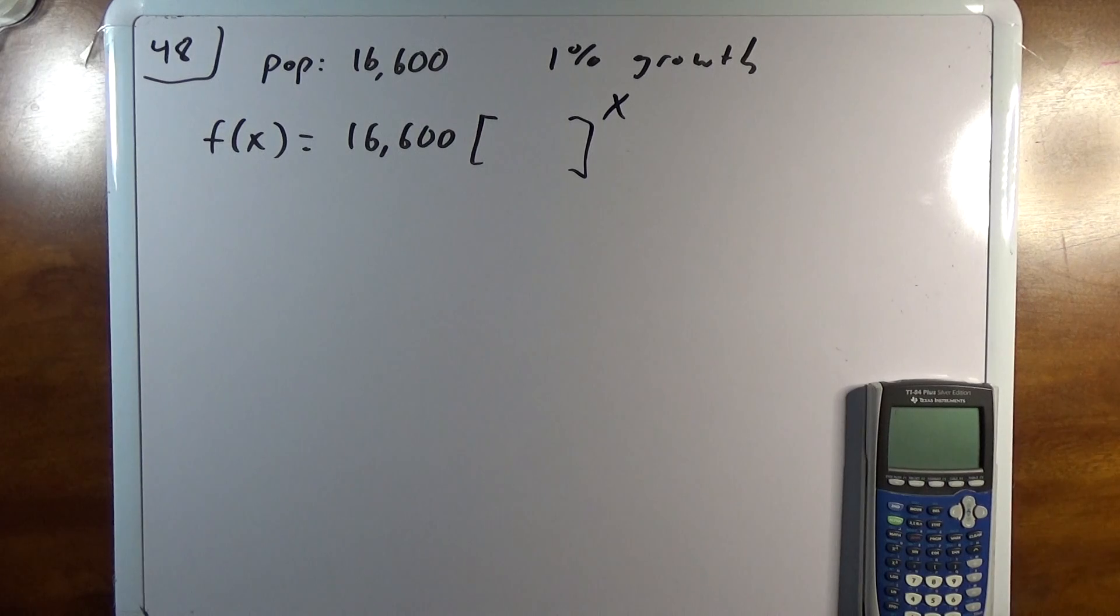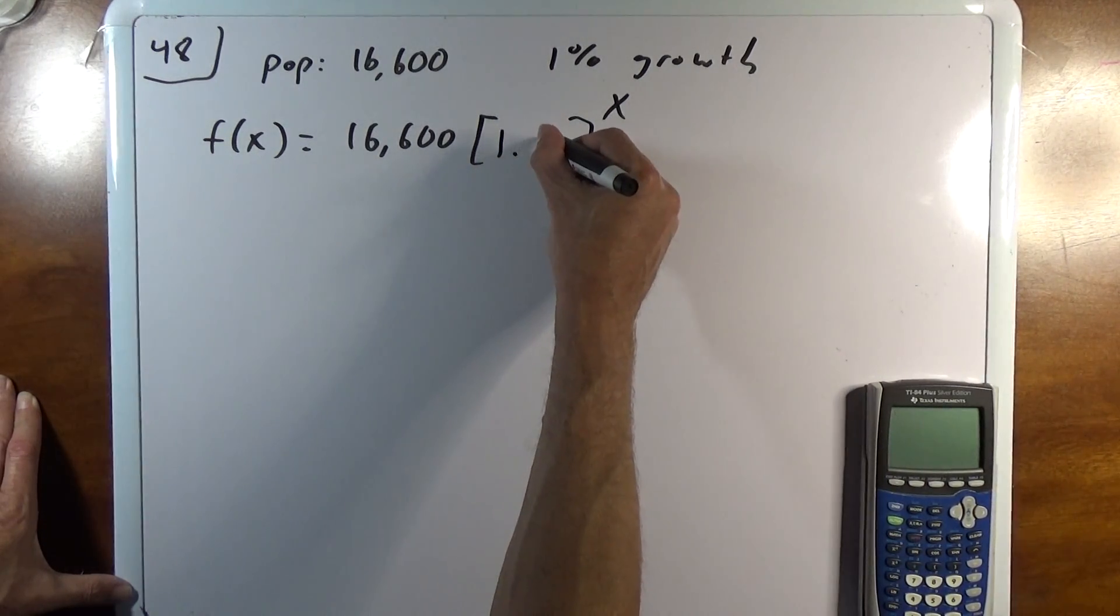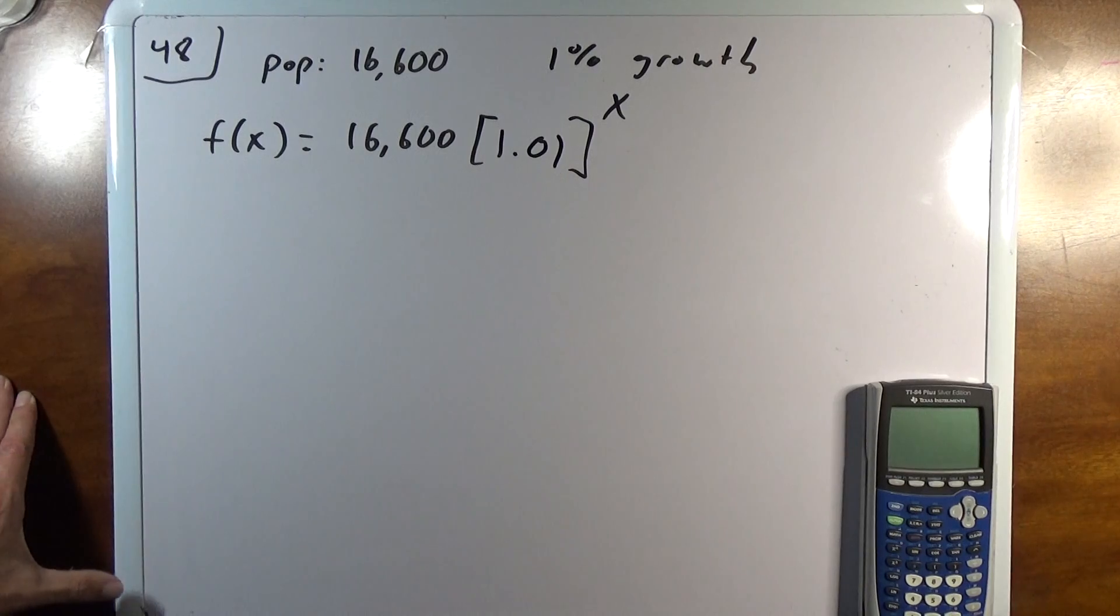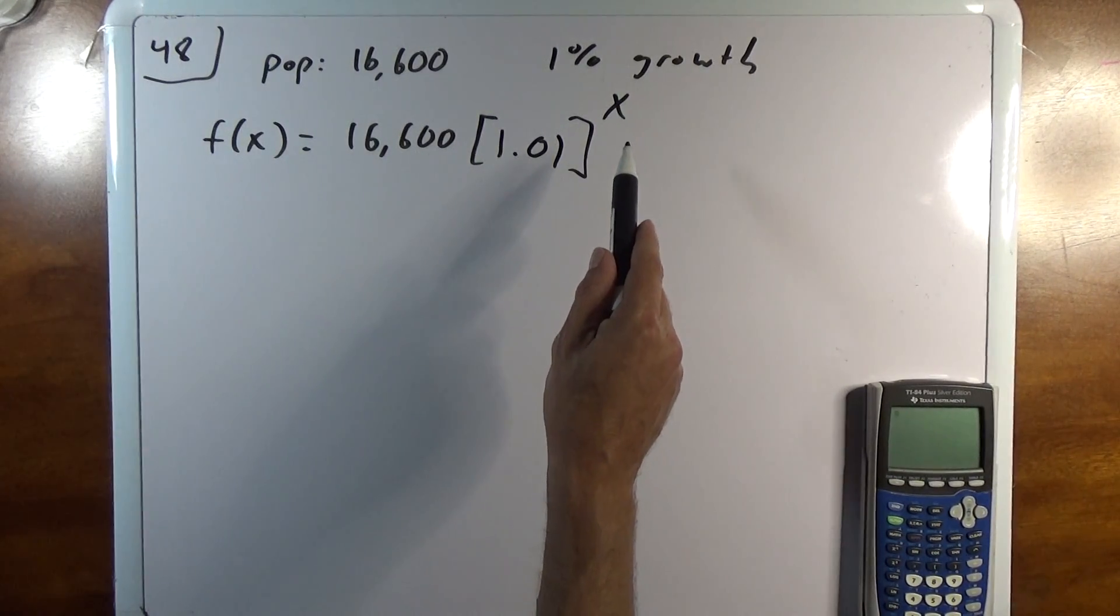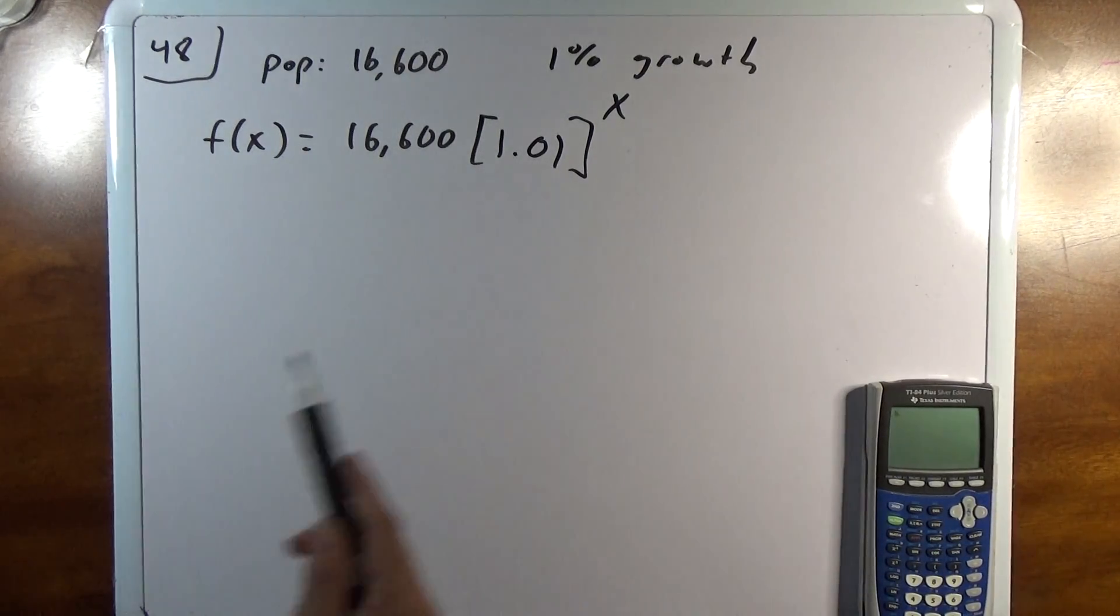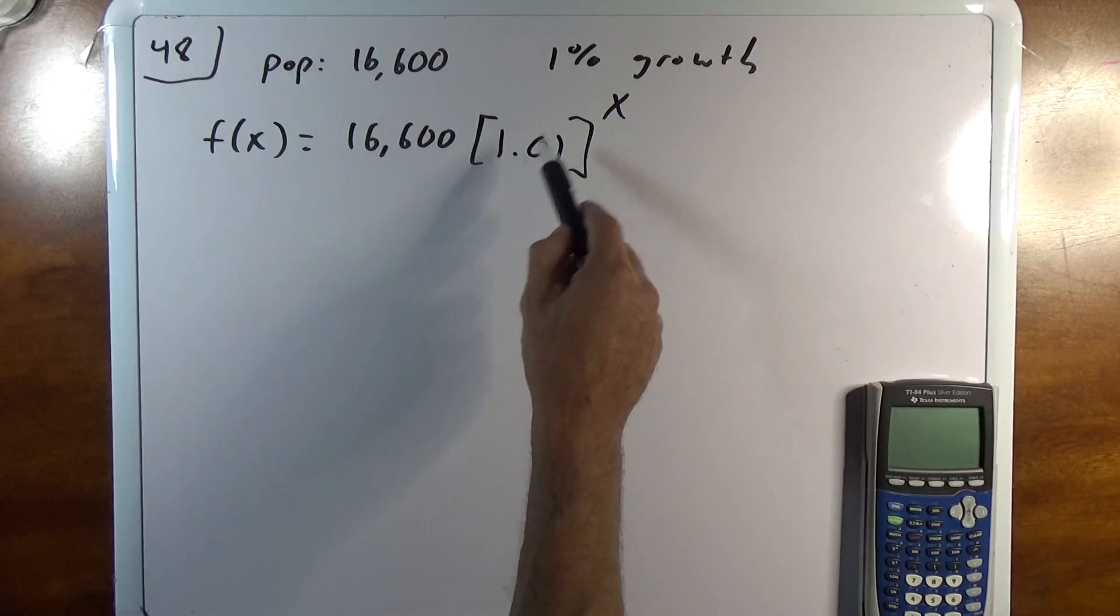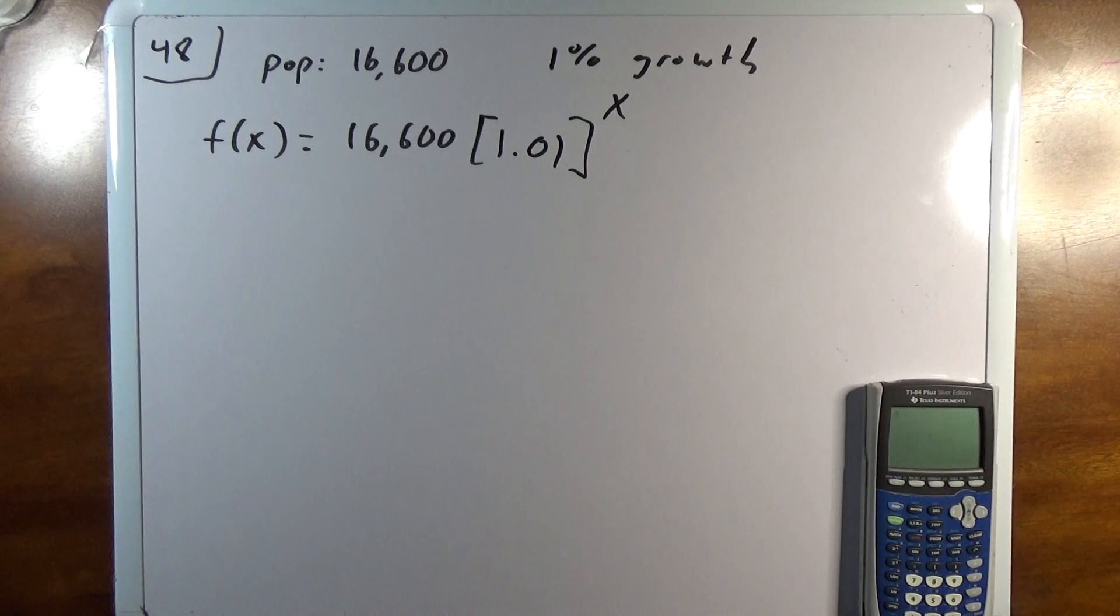So if this number is less, it's between 0 and 1, then the population is going down. If it's over 1, then the population is growing. So growth of 1% is 1% is 0.01, so this is 1.01. Now if X is 0, 1.01 to the 0 is 1, so that tells us we start with 16,600.